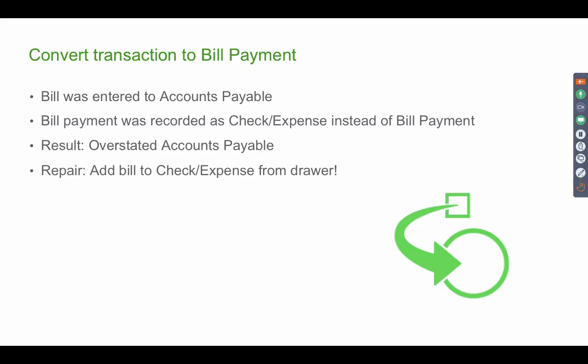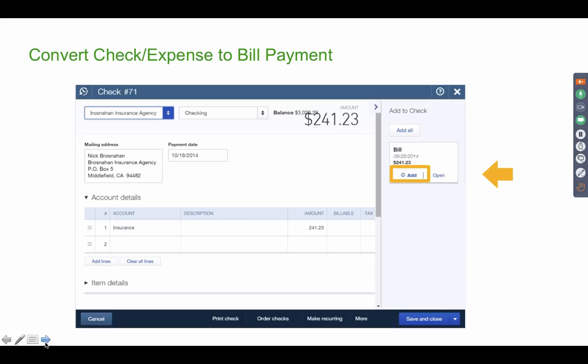The first common error is how to convert a transaction to a bill payment. The error happens when somebody creates a bill — which hits accounts payable — and then the client makes a mistake by creating a check or expense to pay that bill. As a result, the bill stays open forever, the expense is duplicated, and accounts payable is overstated. To repair it, go back to that check and pick the bill from the drawer.